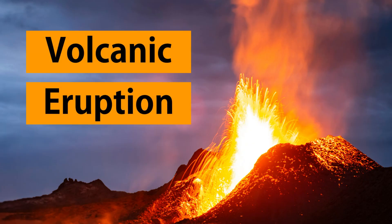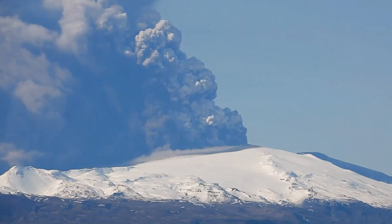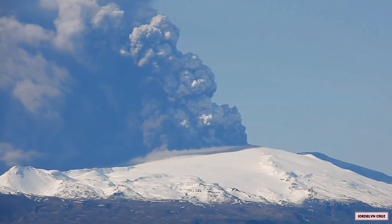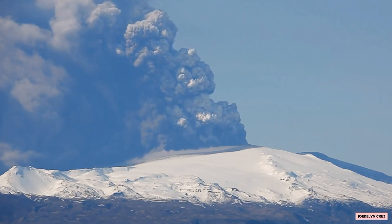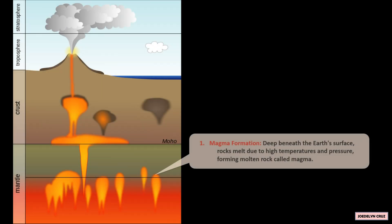Volcanic Eruption. The process of volcanic eruption starts with the magma formation. Deep beneath the Earth's surface, rocks melt due to high temperatures and pressure, forming molten rock called magma.